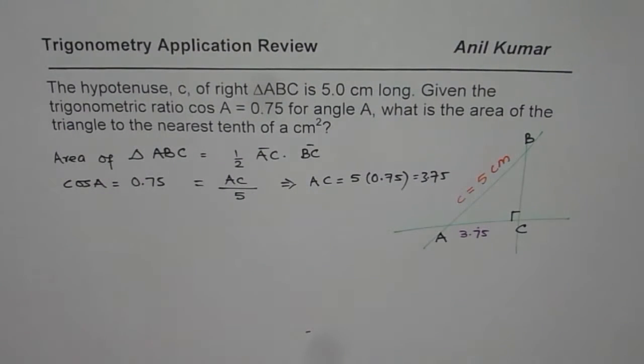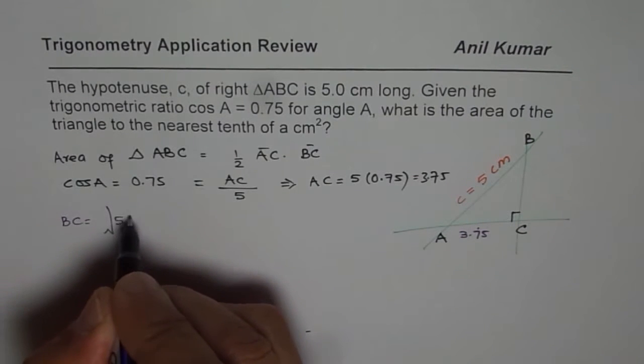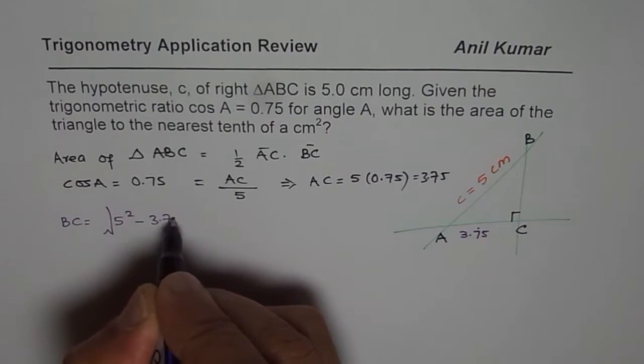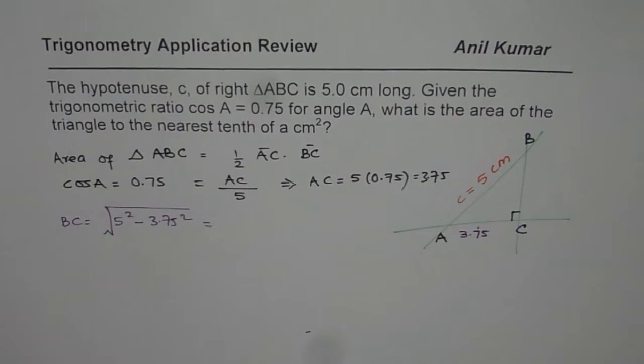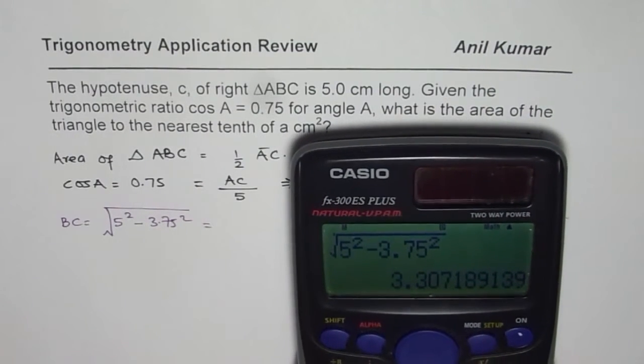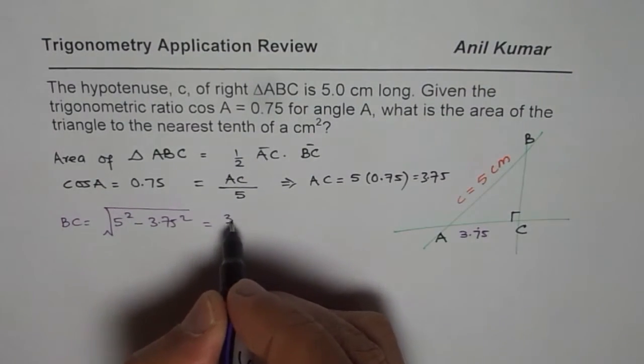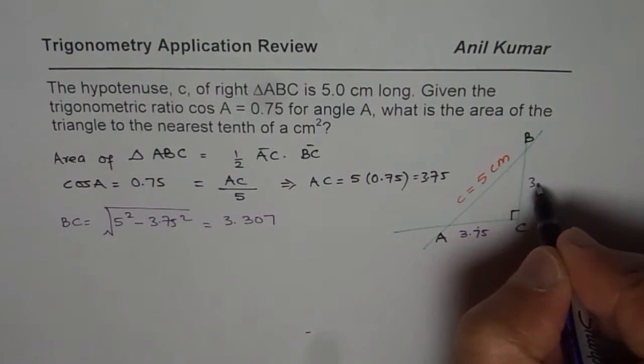We will say BC is equal to square root of 5 square minus 3.75 square. Let's use calculator. Square root of 5 square minus 3.75 square equals approximately 3.307. So we know BC is 3.307. All are in centimeters.